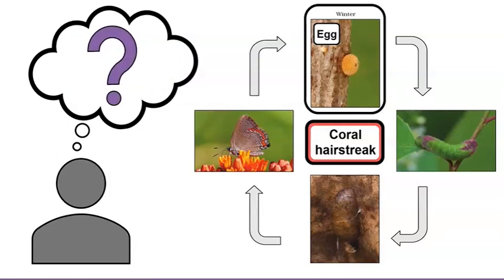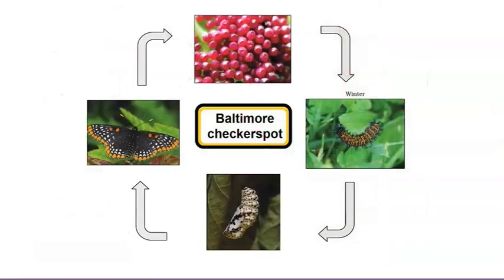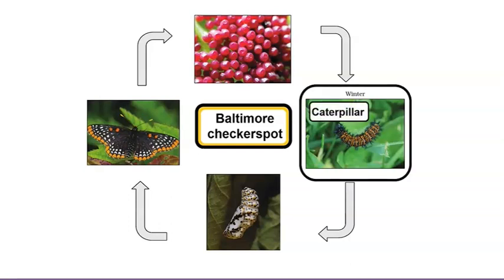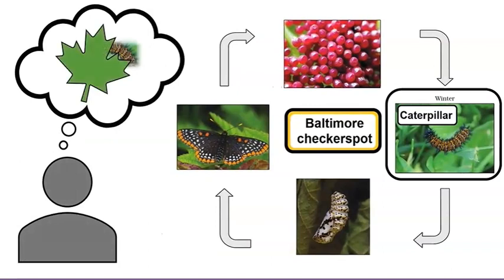Let's see how other butterflies survive the winter months. Let's look at the Baltimore checkerspot. What do you notice about its life cycle? Which stage is it in during the winter? The Baltimore checkerspot is in the caterpillar stage in the winter. How can a caterpillar survive winter? Do you think the Baltimore checkerspot caterpillar tucks under leaves to stay warm during the winter? Looks like a cozy spot.